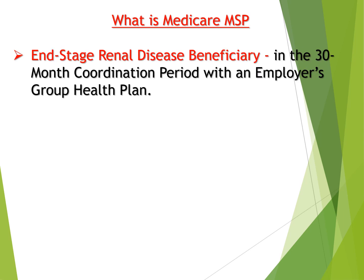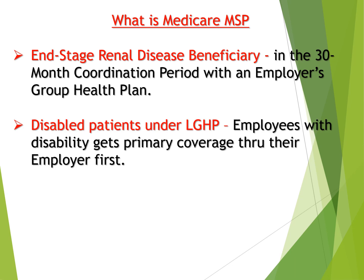Second is End-Stage Renal Disease beneficiary. Medicare patients who have end-stage renal diseases are eligible for Medicare, but if the same patient also has employer insurance, Medicare is secondary in that condition. The employer insurance will process the claim first, and then Medicare secondary insurance will process the remaining claim.